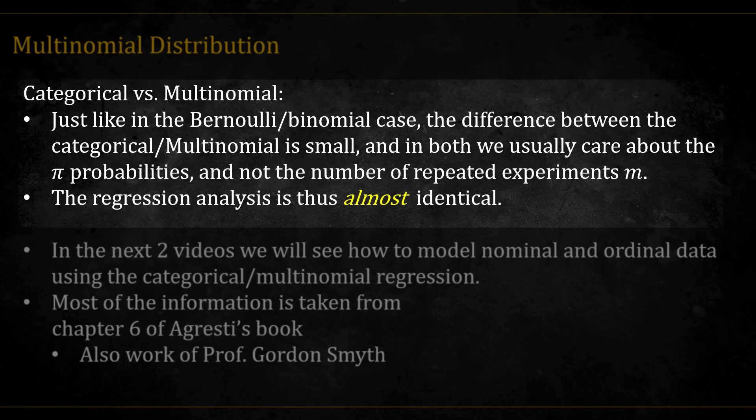Now, modeling-wise, just like in the Bernoulli and binomial case, the difference between categorical and multinomial is very small. And in both, we usually care about the pi's, the probabilities, while the number of repeated experiments, m, is usually known. The regression analysis is thus almost identical.